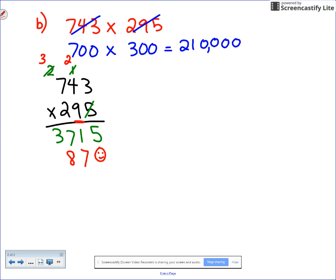I am done with the tens place. Now I'm moving to the hundreds place which is where the two is. Two times three is six, two times four is eight, two times seven is 14.